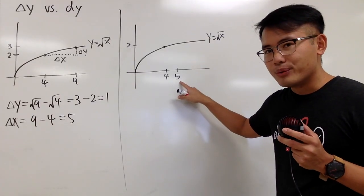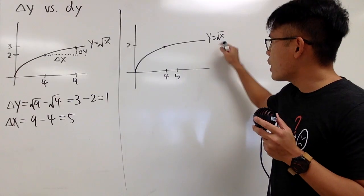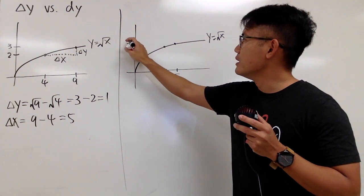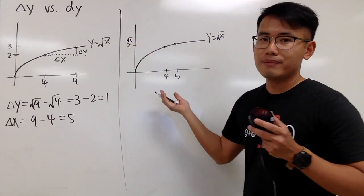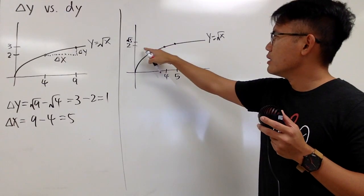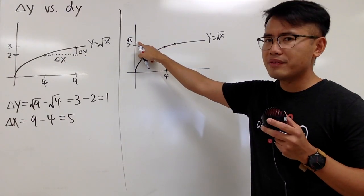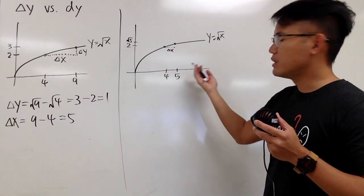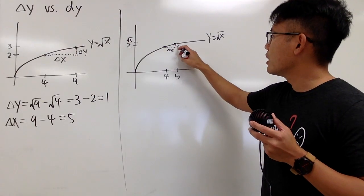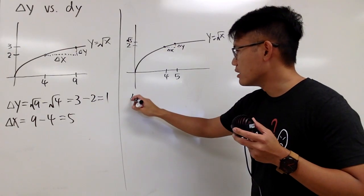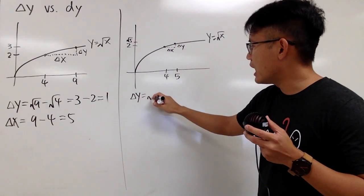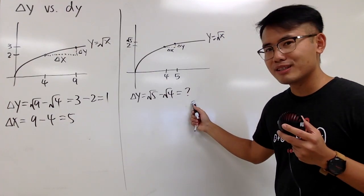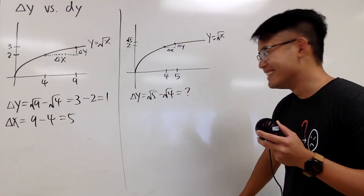So I have this new x value. Yes, you can plug in 5 into square root and you can get the y value. And this y value right here now is going to be square root of 5. Well, we went up from 2 to square root of 5. In this case, you see, this is the delta x. We can compute that easily, but how about the delta y? Well, I'll write this down. Delta y is square root of 5 minus square root of 4, but it seems like I'm stuck because I don't have a calculator with me.